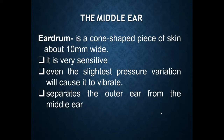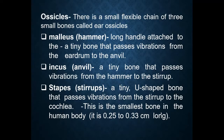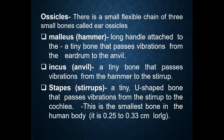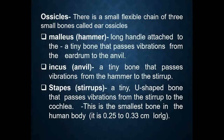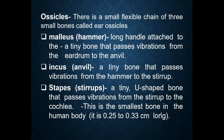The middle ear also contains the ossicles — a flexible chain of three bones. First is the malleus or hammer, a tiny bone that produces vibration when there is an increase in pressure. Then comes the anvil or incus, which passes those vibrations from the hammer to the next part. That is the stapes or stirrups — U-shaped bones that pass vibrations from the incus to the cochlea. The stapes is also the smallest bone in the human body, ranging from 0.25 to 0.33 centimeters.